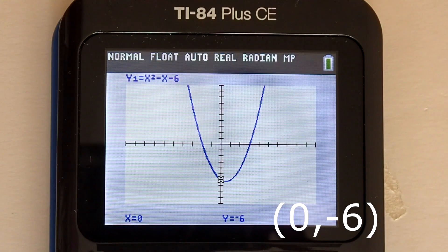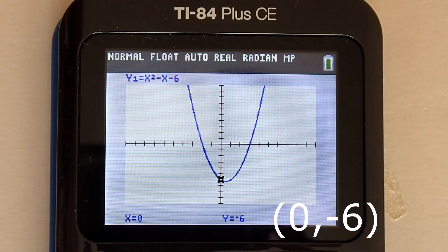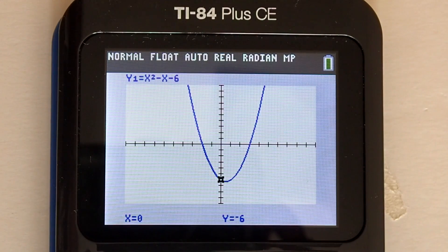That is it. That is how to find the x and y intercepts of a function using the graphing feature of the TI-84 plus CE calculator. If you like this video please give it a thumbs up and please subscribe to this channel.